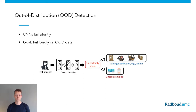Therefore, we would like our model not to fail silently, but to fail loudly on out-of-distribution data. For instance, by giving an uncertainty score. Here, a high uncertainty would indicate an out-of-distribution sample, which would require more expert supervision.